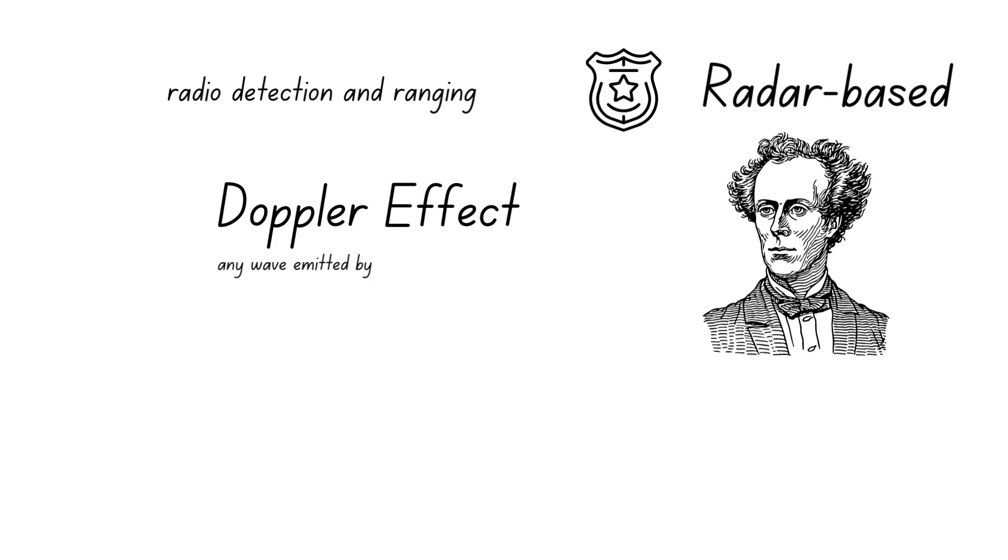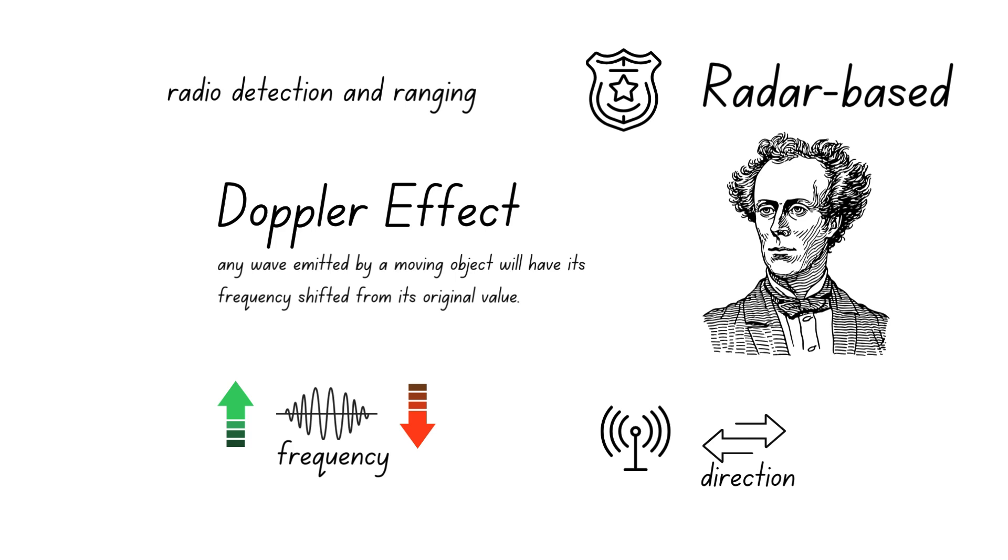which states that any wave emitted by a moving object will have its frequency shifted from its original value. This shift can either increase or decrease the frequency depending on the direction of motion of the source relative to the observer or detector.